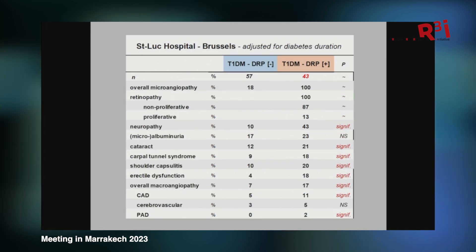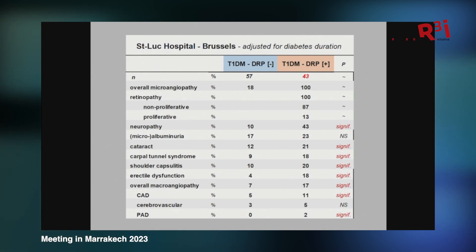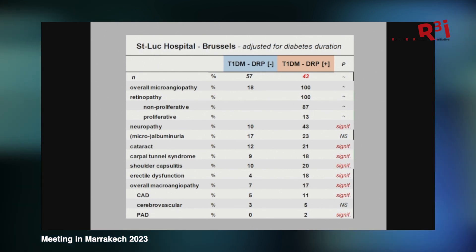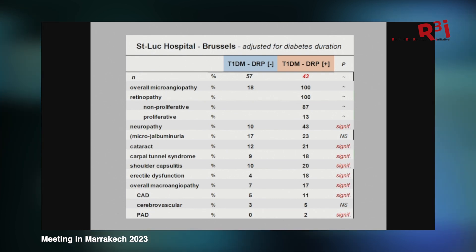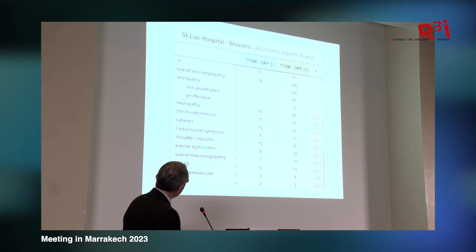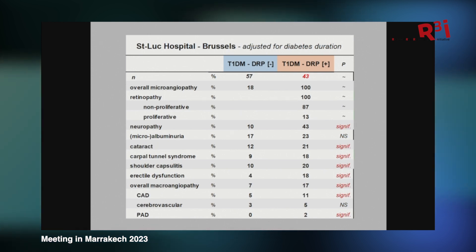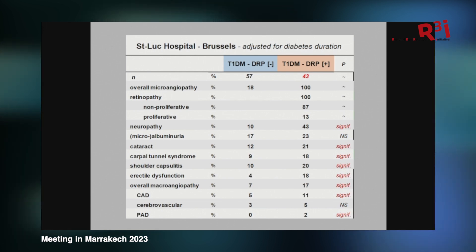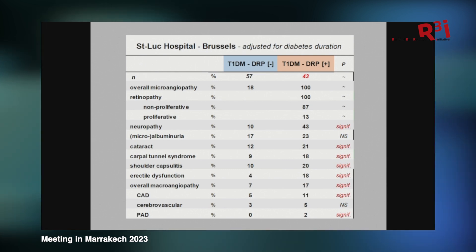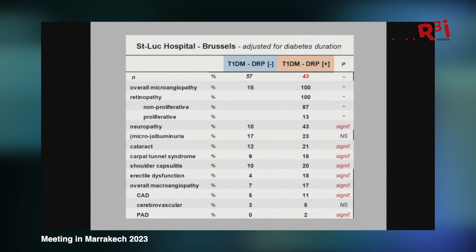What was not found was an association with microalbuminuria — a lot of patients are naturally protected from CKD, even if they have high glucose. What was significantly associated was neuropathy. I also looked at some non-vascular complications of high glucose, such as cataract and shoulder capsulitis. What I did not expect was such an association with macroangiopathy, but not with cerebrovascular disease — and these are type 1 diabetics. So what was puzzling was this association with macrovascular disease, which was not de facto expected.